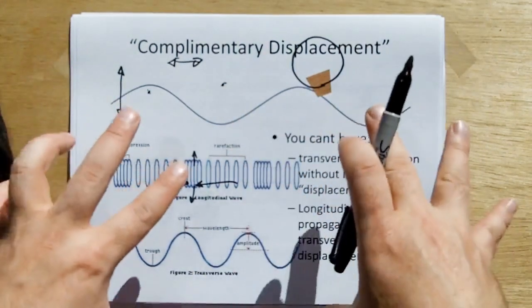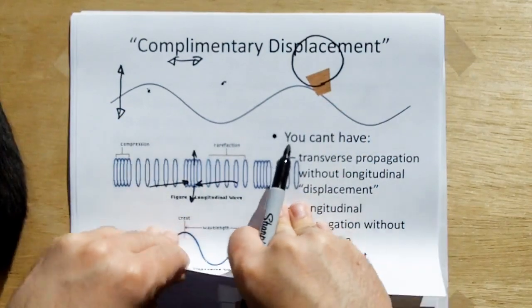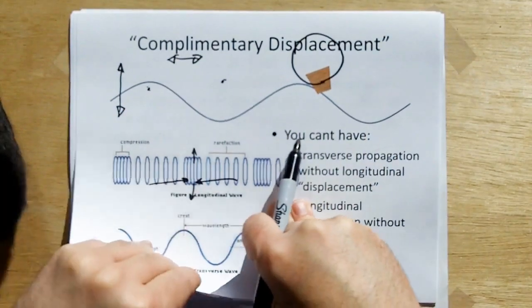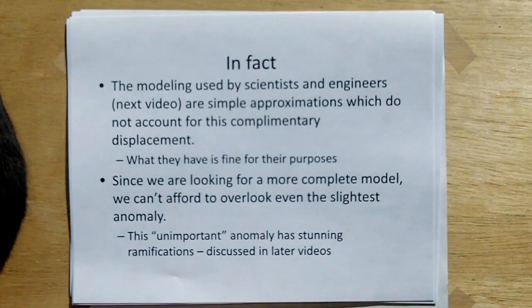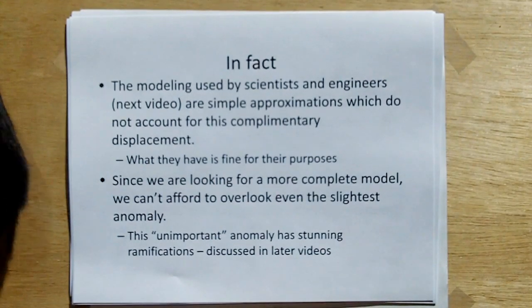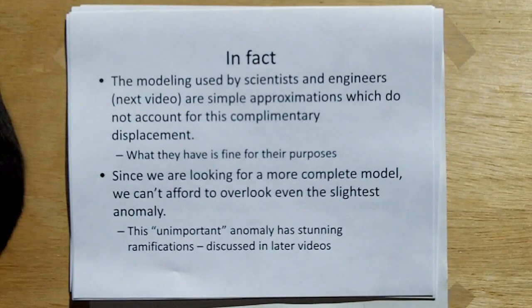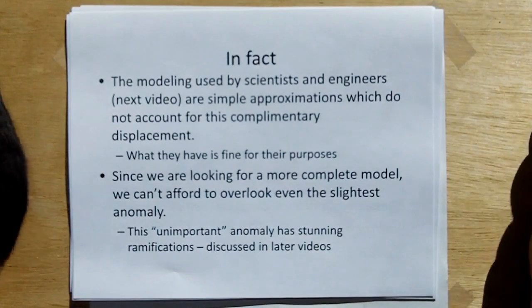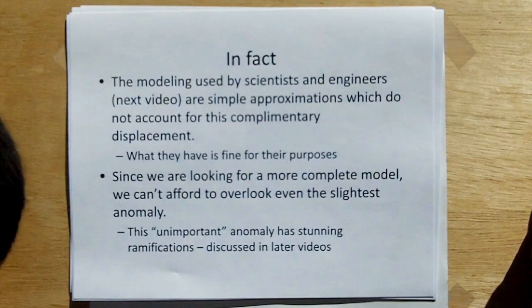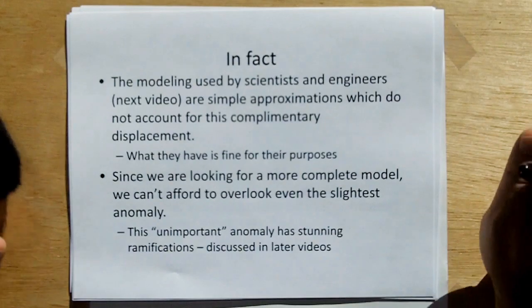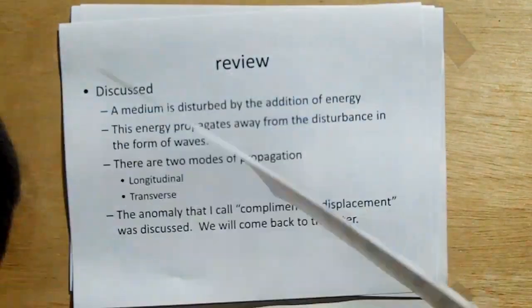These complementary displacements, or complementary flows, are not accounted for in the models that we use every day in engineering. In fact, the modeling used by scientists and engineers, which are in the next video, are simple approximations which do not account for this complementary displacement. But what they have is perfectly fine for their purposes. But since we are looking for a more complete model, we can't afford to overlook even the slightest anomaly, because even the most unimportant anomaly can have stunning ramifications, which will be discussed later.